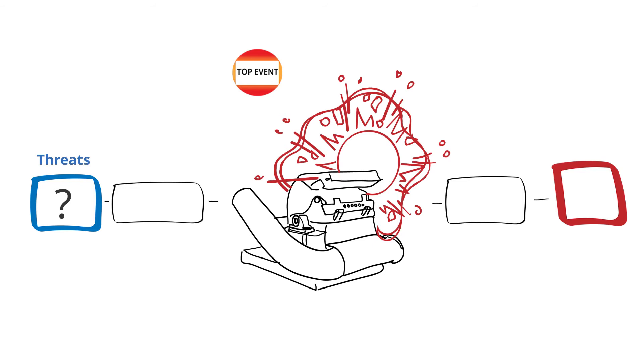What are the threats or things that could occur to cause this top event? In this example, it might be a faulty spark sensor. So following this through, we see that if a spark sensor fails, the likelihood of the top event, ignition of combustible dust, increases.